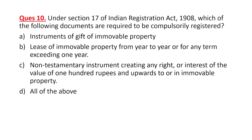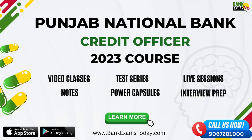Under Section 17 of the Indian Registration Act 1908, which documents are compulsorily required to be registered? These include: instruments of gift of immovable property; lease of immovable property from year to year or any term exceeding one year; non-testamentary instruments creating any right or interest of value of 100 rupees and upwards in immovable property. All such documents must be registered within specific time limits.